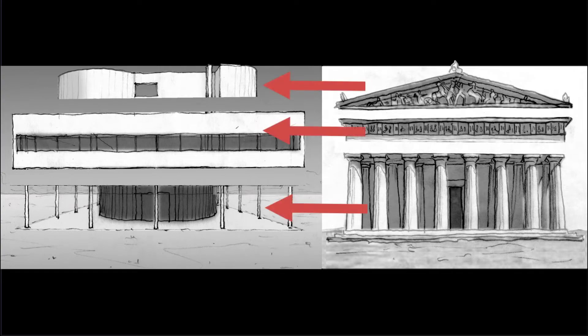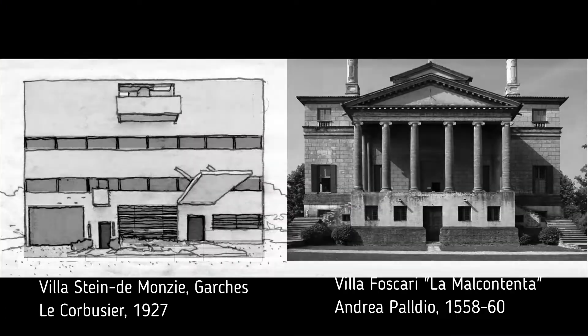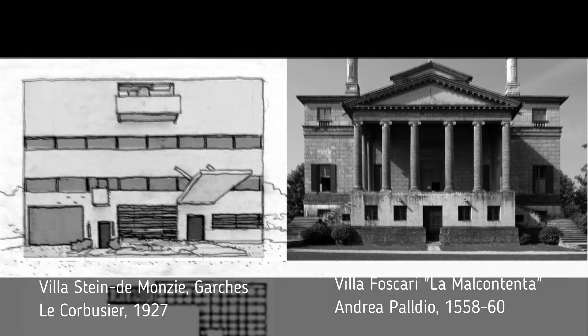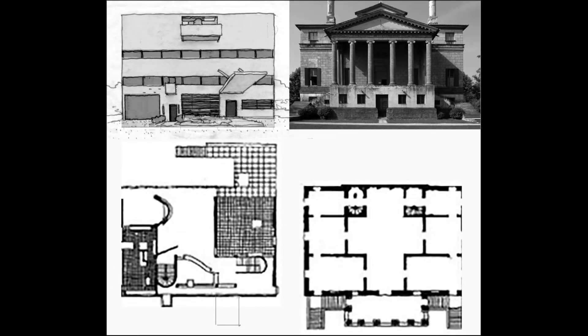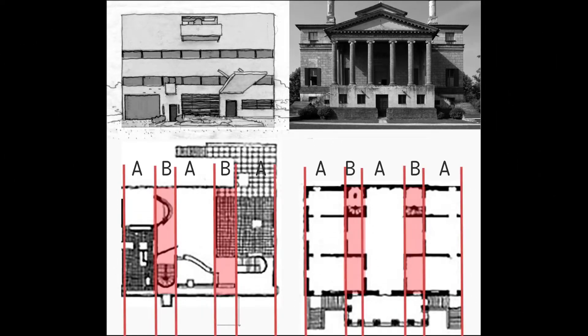Colin Rowe, in his seminal 'Mathematics of the Ideal Villa,' adroitly implies how Le Corbusier seems to have taken Andrea Palladio's Villa Foscari, or La Malcontenta, and the Parthenon as explicit generative ideas for the two pastoral respective villas. But what he does not seem to convey is the simultaneous refutation of classicism itself — but that's a different lecture.